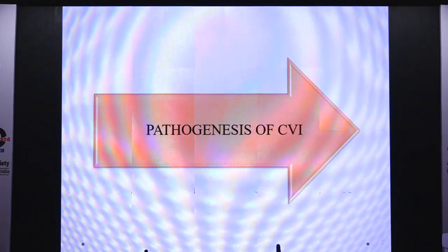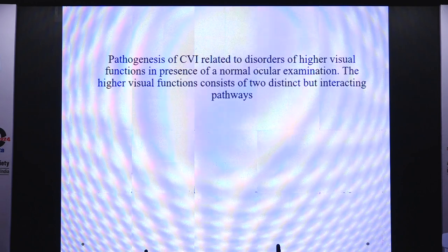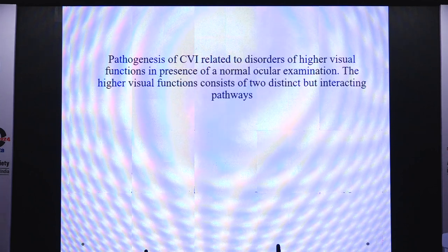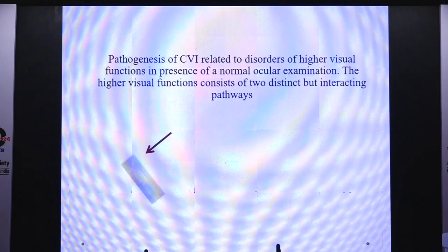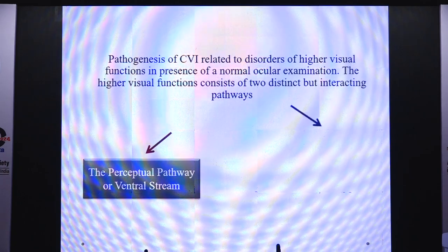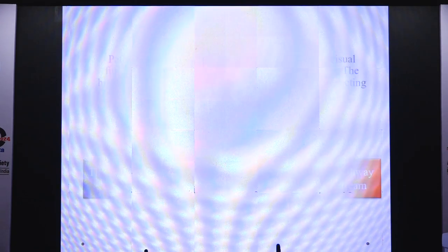The pathogenesis of CVI is related to disorders of higher visual functions in the presence of a normal ocular examination. The higher visual function consists of two distinct but interacting pathways: one is the perceptual pathway or ventral stream, and the other is the action pathway or dorsal stream.